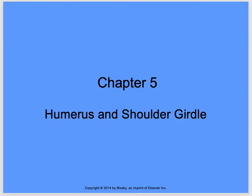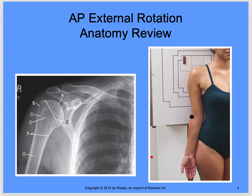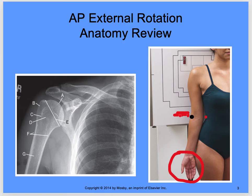We've got the humerus and shoulder girdle. We're going to skip the objectives and continue into the AP external rotation anatomy review. This is just review — external rotation: look at the position of the hand. On that external rotation, look at your epicondyles here and here. You're going to want to bring those parallel to the image receptor.